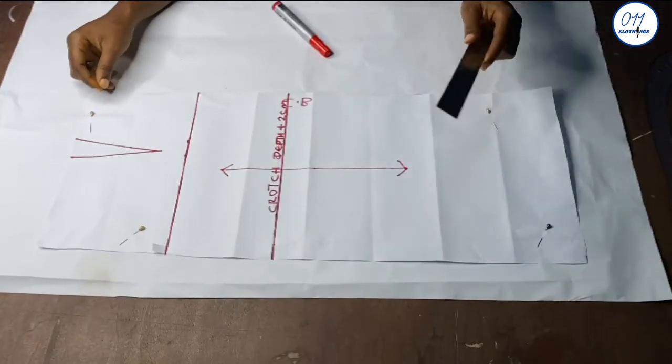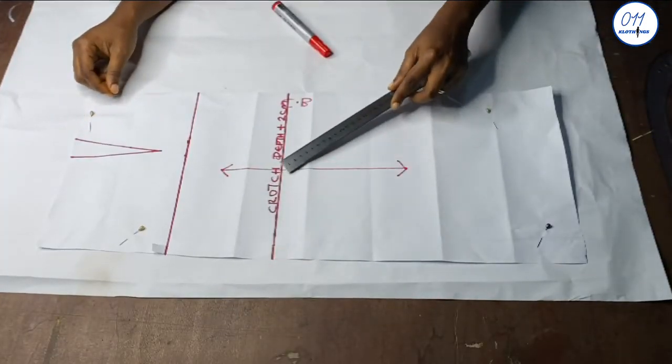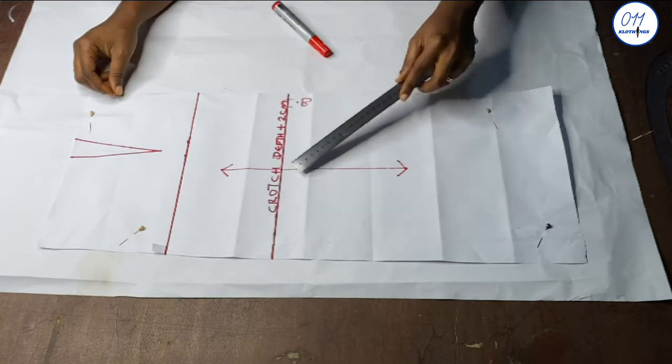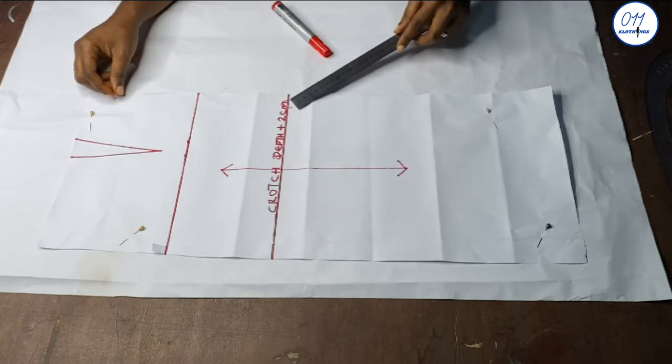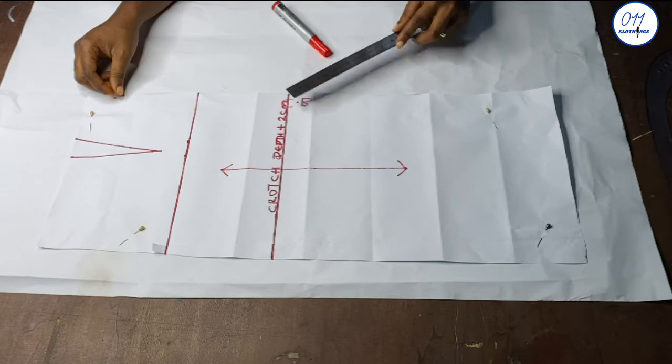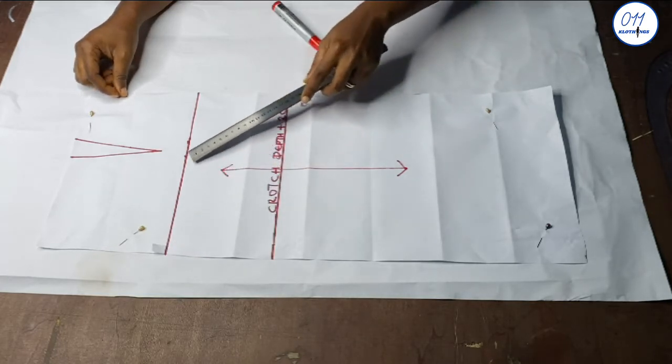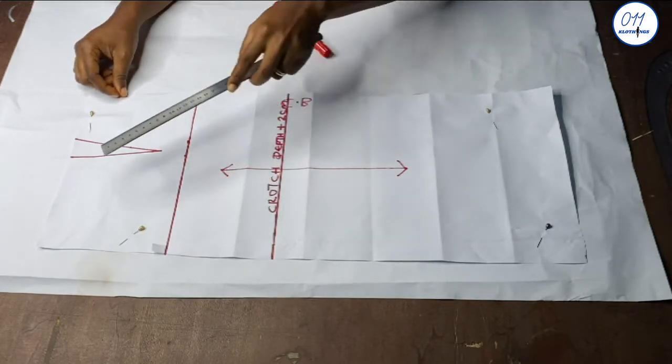So this is my back pattern. Just like the front, this line is the crotch depth line plus 2 centimeters and it was measured from the waistline downwards. This line is the middle line between the crotch depth line and the waistline.